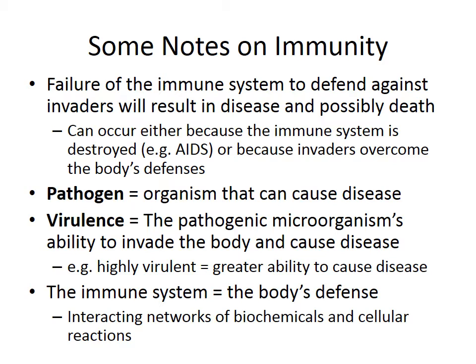Failure of the immune system to defend against invaders will result in disease and possibly death. For example, foals can be born with severe combined immunodeficiency, also known as SCID. These foals are born with essentially no immune system and don't take long to succumb to infection and die. That's an example of a case where the immune system never develops.